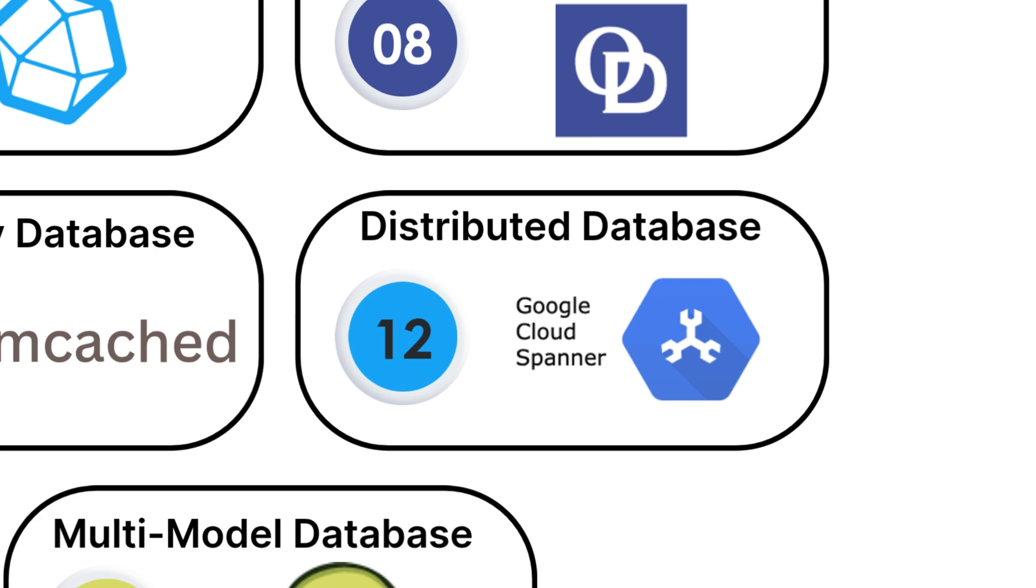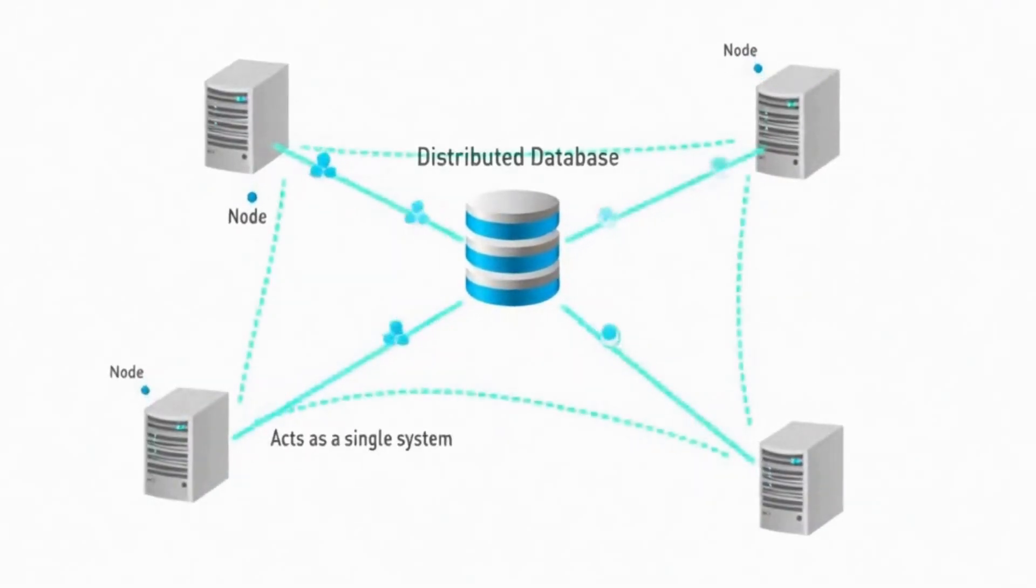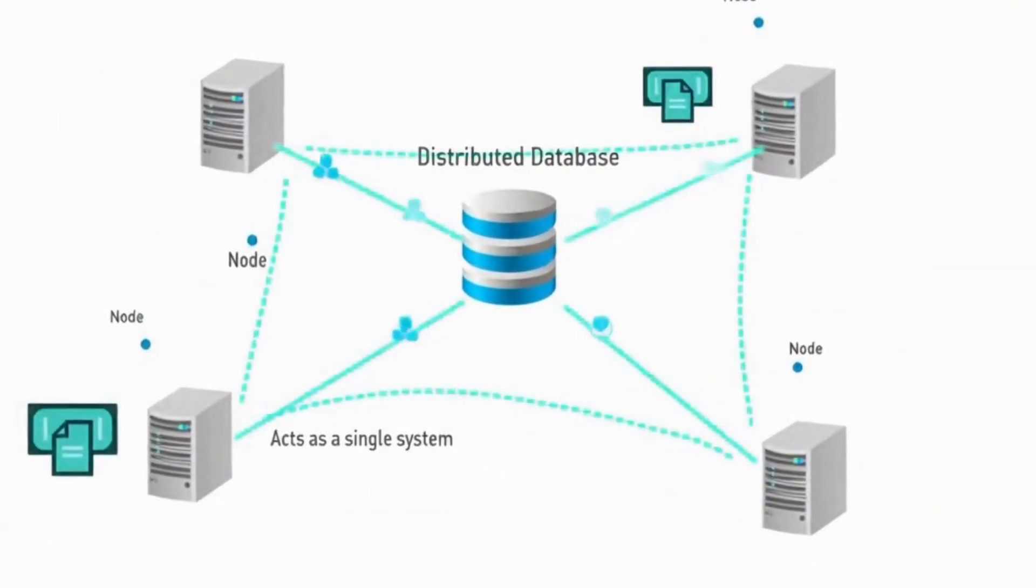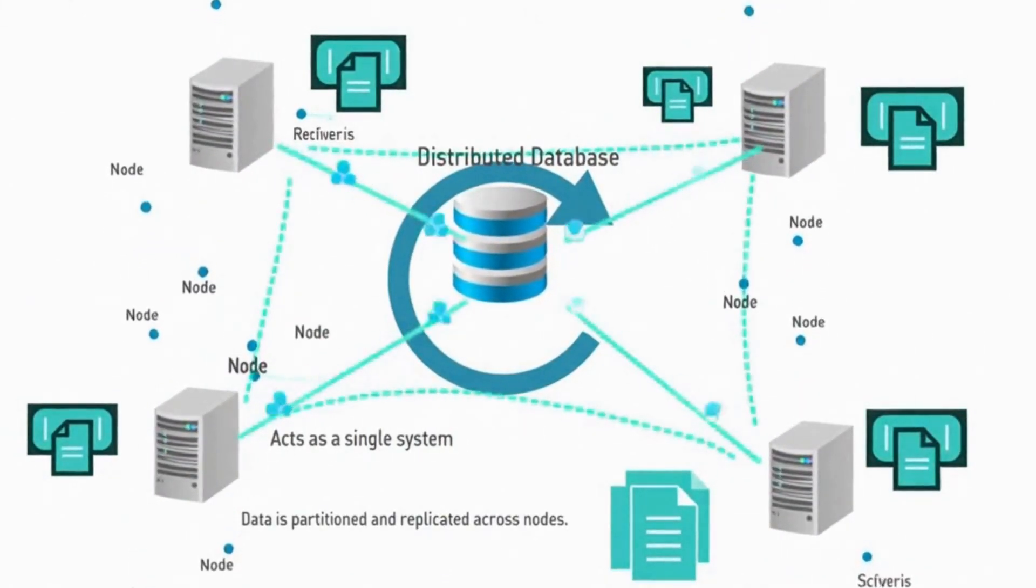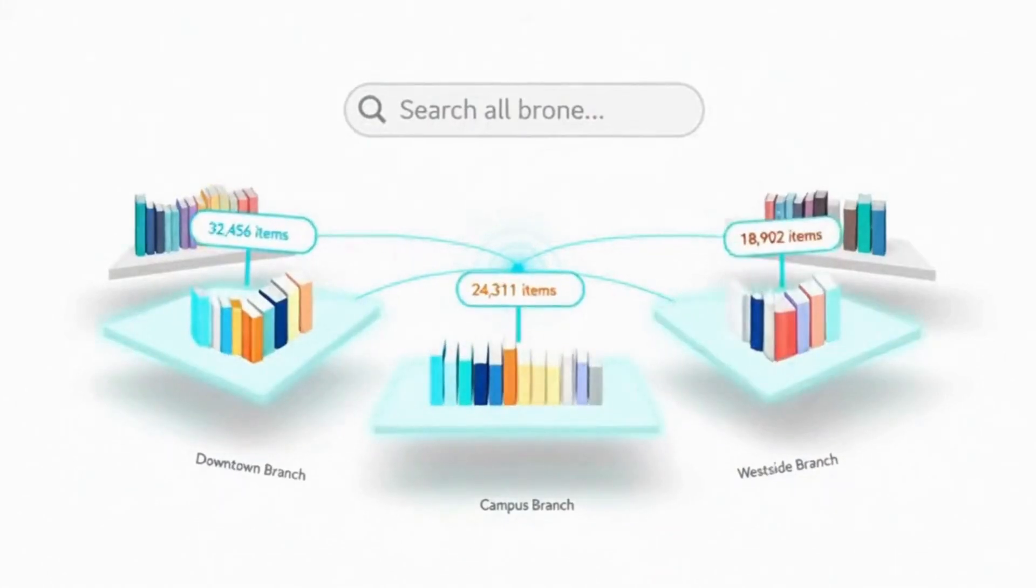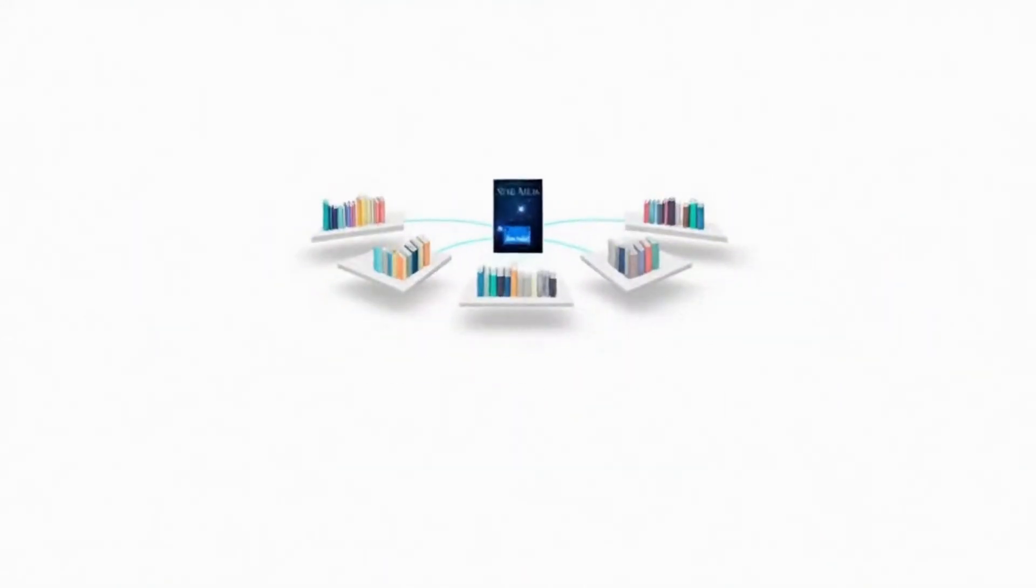Number twelve, distributed databases. Distributed databases spread data across multiple computers or servers, working together as if they're one giant database. Think of it like a library system, where books are stored in multiple locations, but you can find any book from any location.